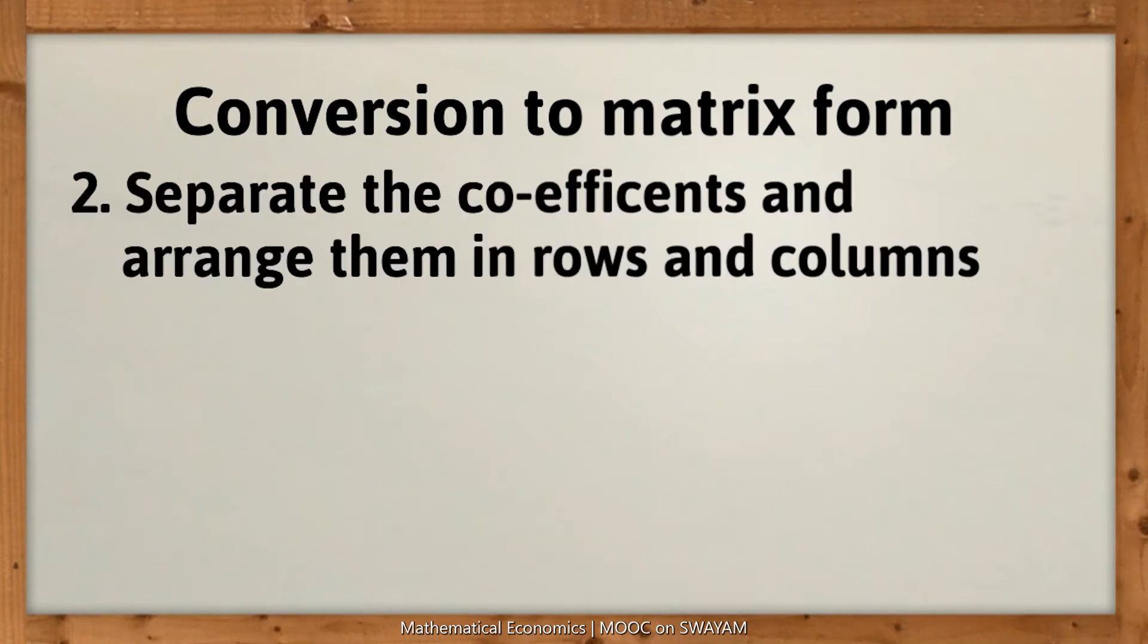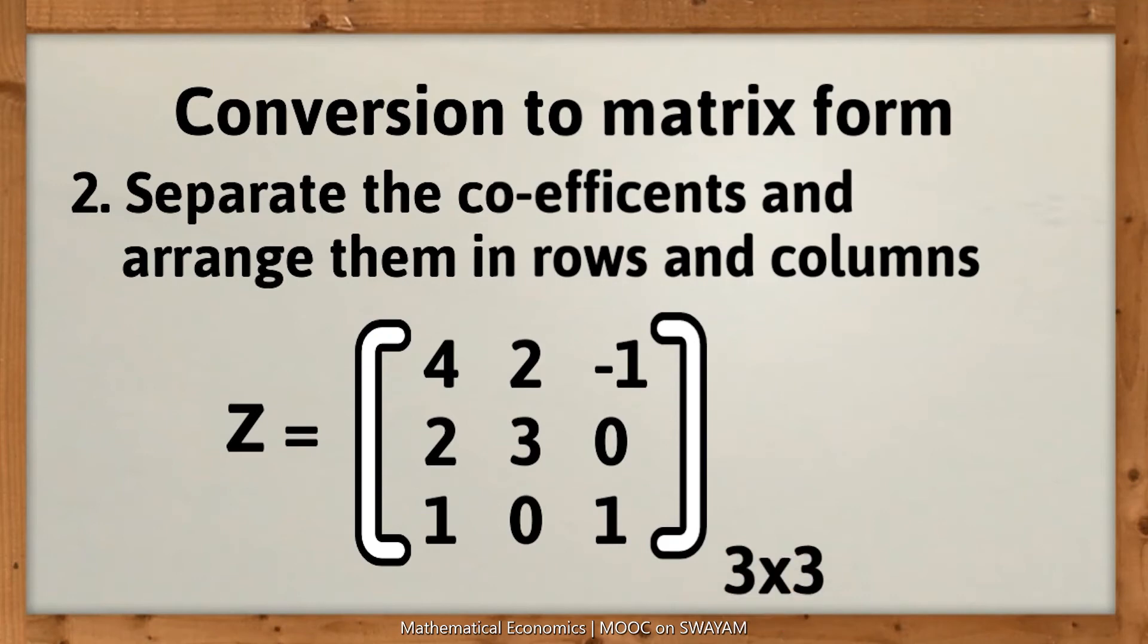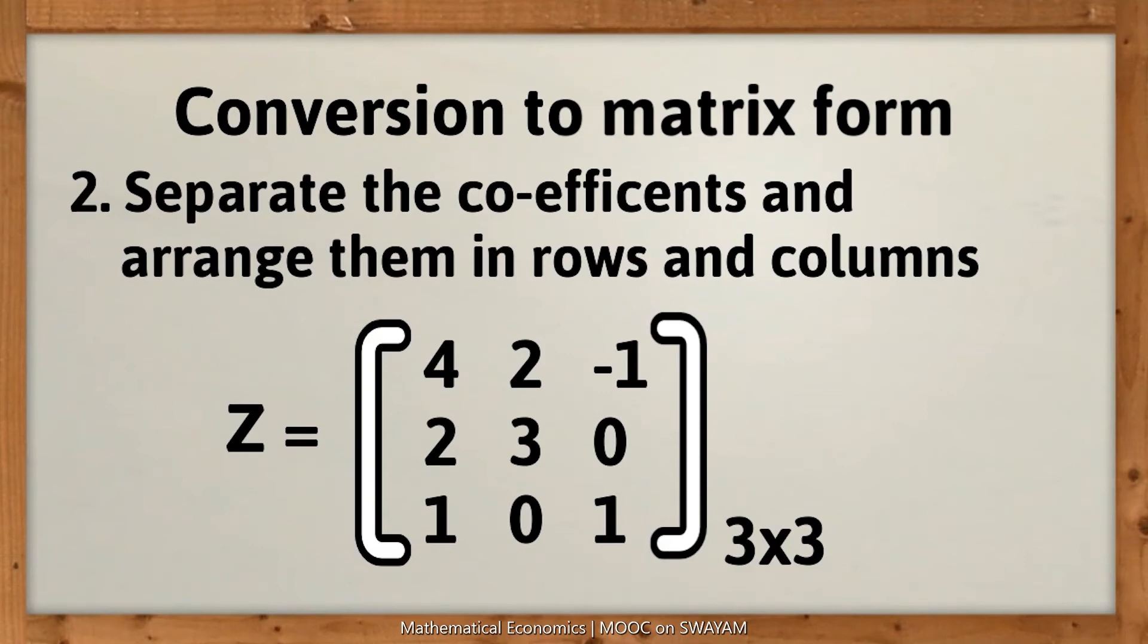Second, we separate the coefficients of each equation in rows and columns and give a name to this matrix. Let us say Z is a 3 by 3 matrix of all the coefficients from the given system of three equations. The rows represent the three equations and the columns represent the three variables placed in the order of x, y and z.